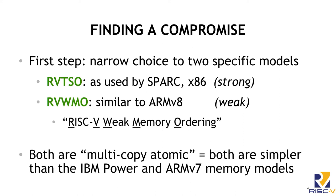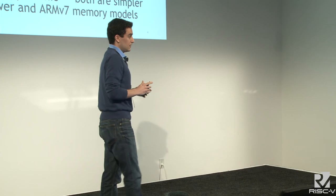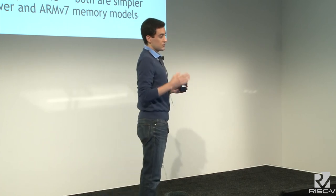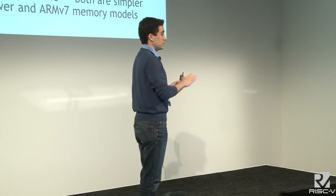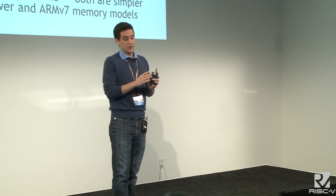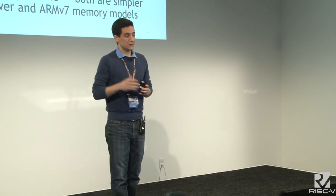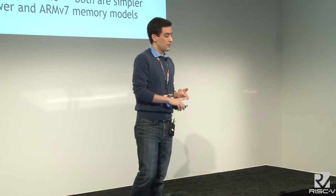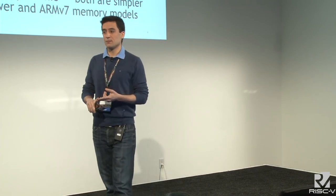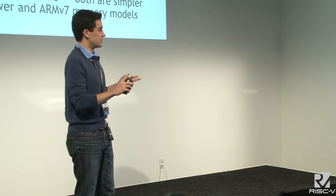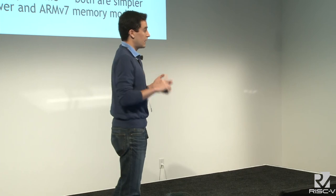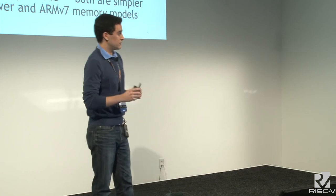One important high-level point: both of these models are what we call multi-copy atomic — sometimes called other-multi-copy-atomic in the ARM literature. What that means at a high level is that cores are allowed to peek at stores they have issued, as long as those stores haven't been observed by anybody else. You can peek at your own stores early, but you can't peek at anybody else's stores until they become globally visible. That decision alone is what keeps this memory model from getting enormously complex.